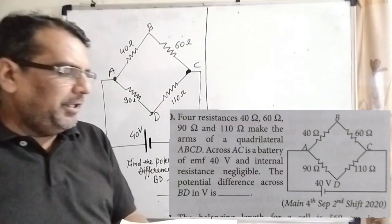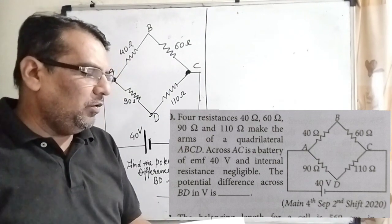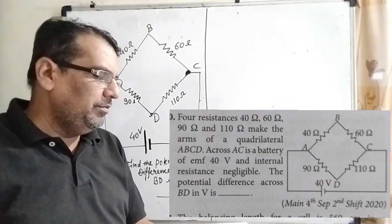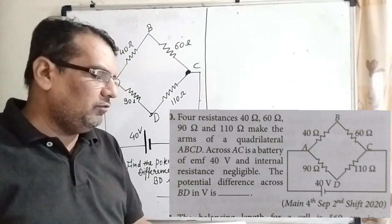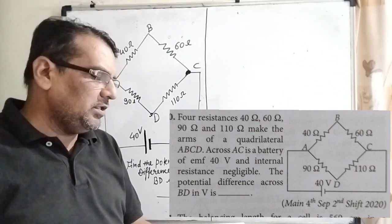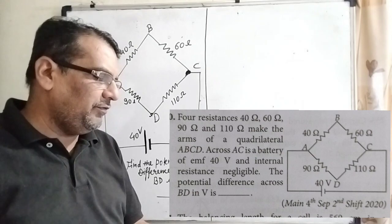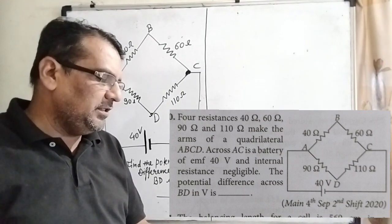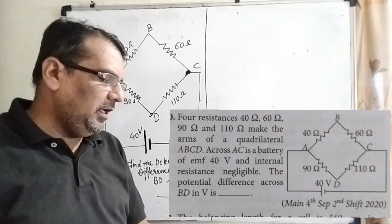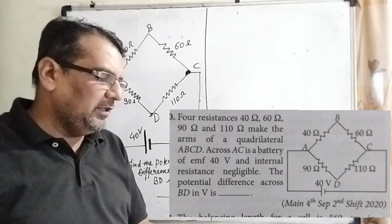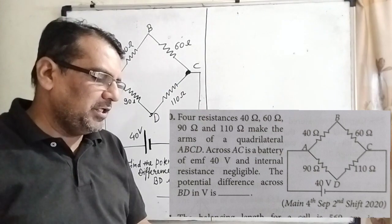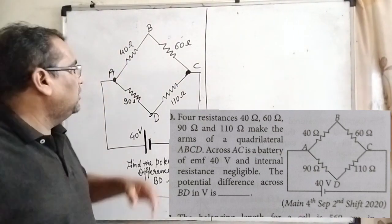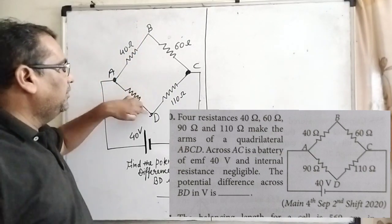The question is here: Four resistances—40 ohm, 60 ohm, 90 ohm, and 110 ohm—make the arms of a quadrilateral ABCD. Across AC is a battery of EMF 40 volts and internal resistance negligible. The potential difference across BD in volts is—this question is from JEE Mains 2020. We have to find the potential difference from B to D.